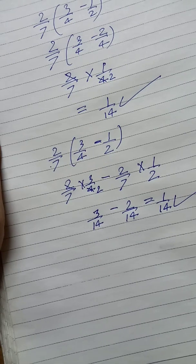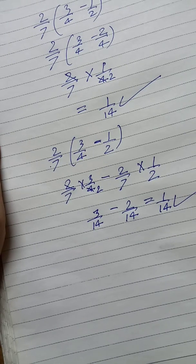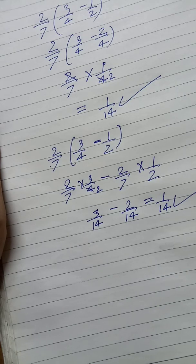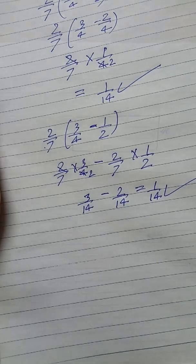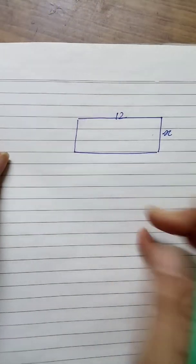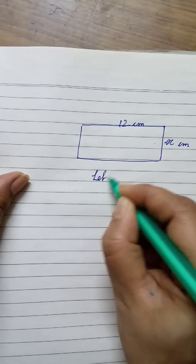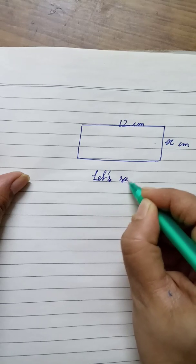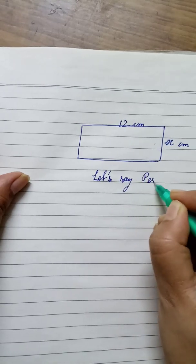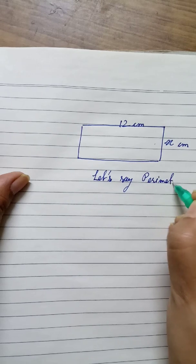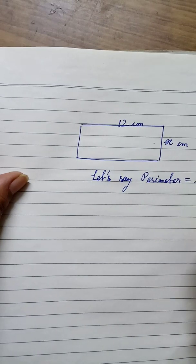Now the important question is, what is the purpose of learning the distributive law of multiplication over addition? It should have a purpose in mathematics. This is a rectangle. It has a length of 12 cm and a breadth of x cm. And the perimeter is equal to 36 cm.